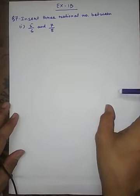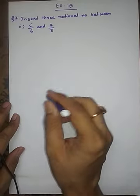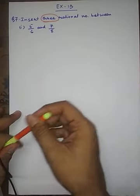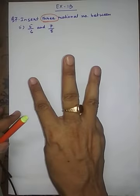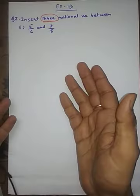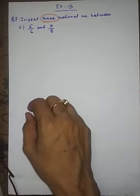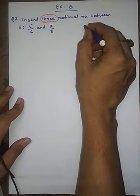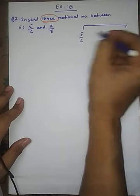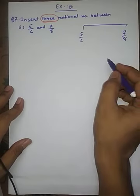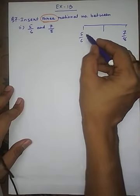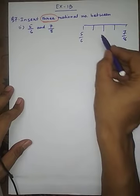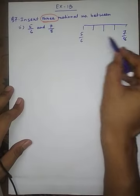The first technique will be used for finding up to three rational numbers — that means this method is useful if you have to find one, two, or three rational numbers. If you have to find more than three, I will tell you the second technique. The concept here is: suppose we have the two rational numbers five by six and seven by eight. We will first find the rational number between these two, then find the rational number between five by six and the middle one, and then between seven by eight and the middle one. Those three rational numbers will be our answer.